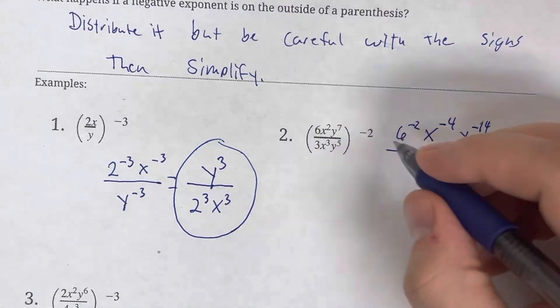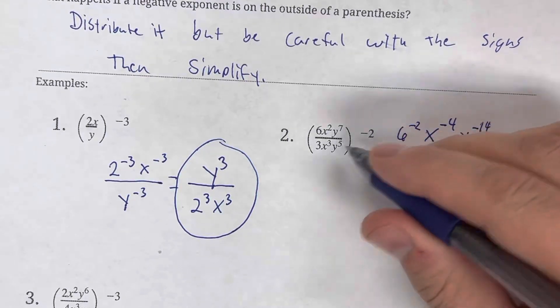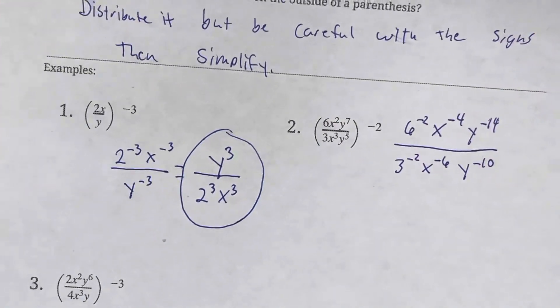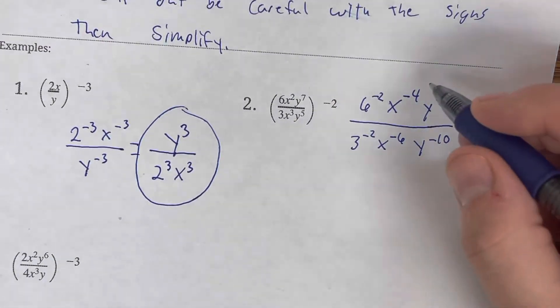Now we have 3 to the negative 2nd, x to the negative 6th, and y to the negative 10th. So, again, negative exponents all over the place. We have to simplify.